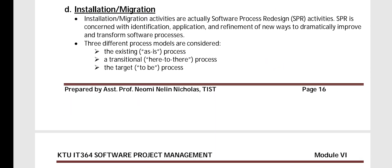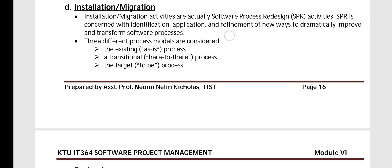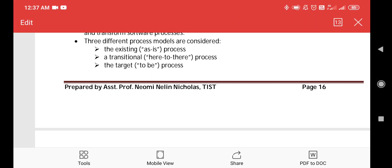The fourth activity is installation or migration, which involves software process redesign (SPR) activities. SPR is concerned with the identification, application, and refinement of new ways to dramatically improve software processes. The process models involved are: the existing process (as-is model), the transitional process (moving from current to target), and the target or to-be process — which represents migration to the improved state.